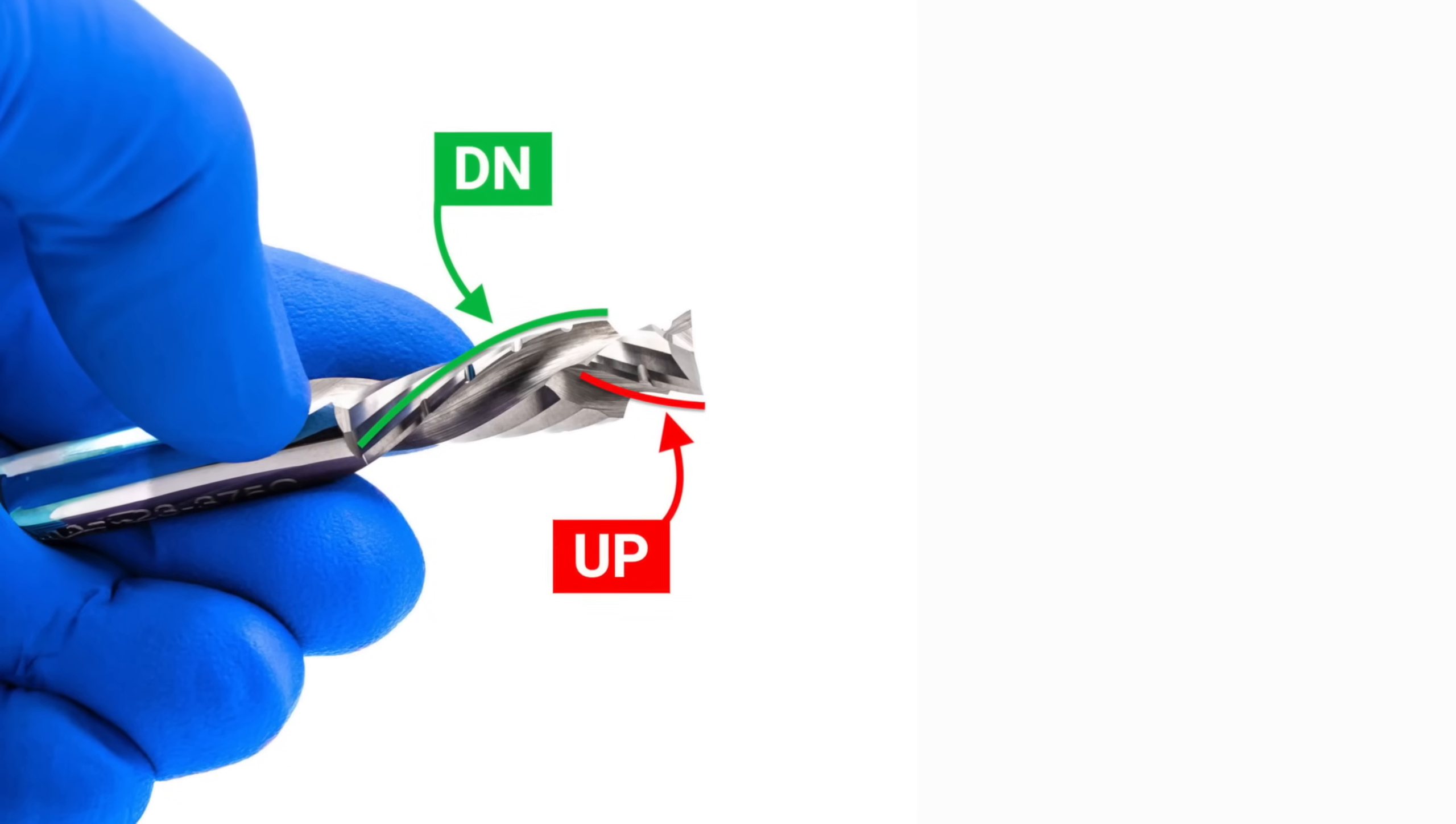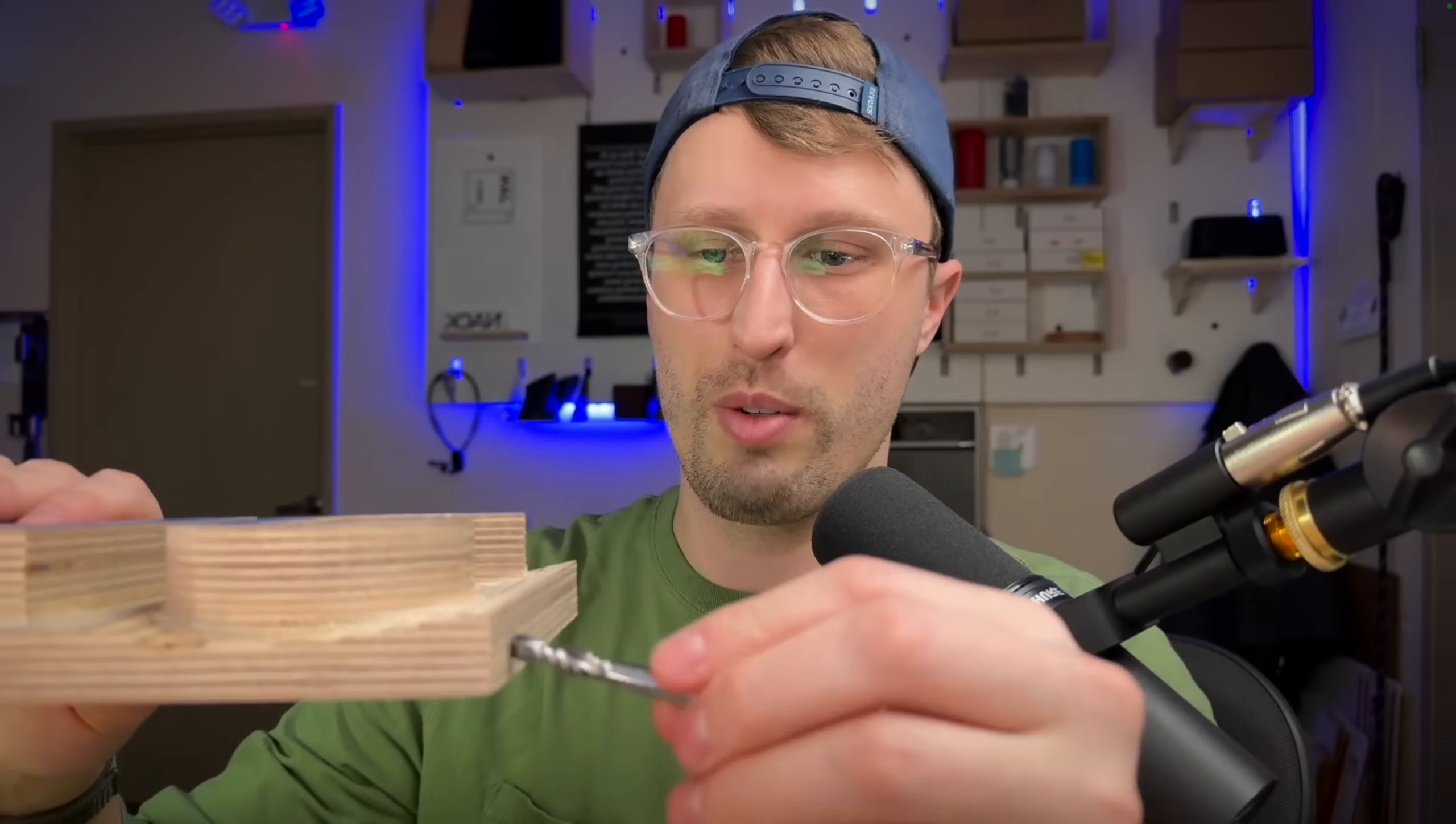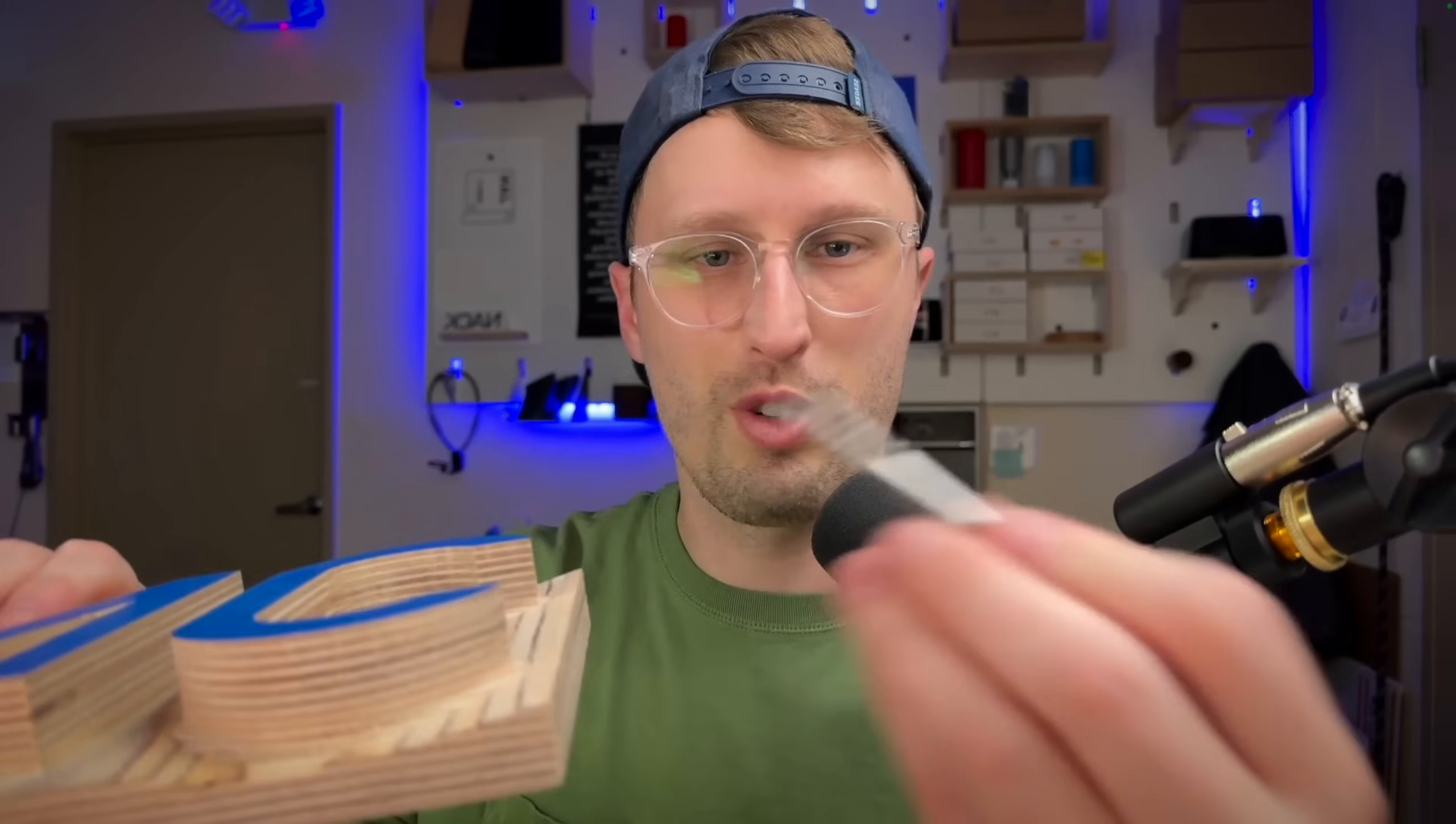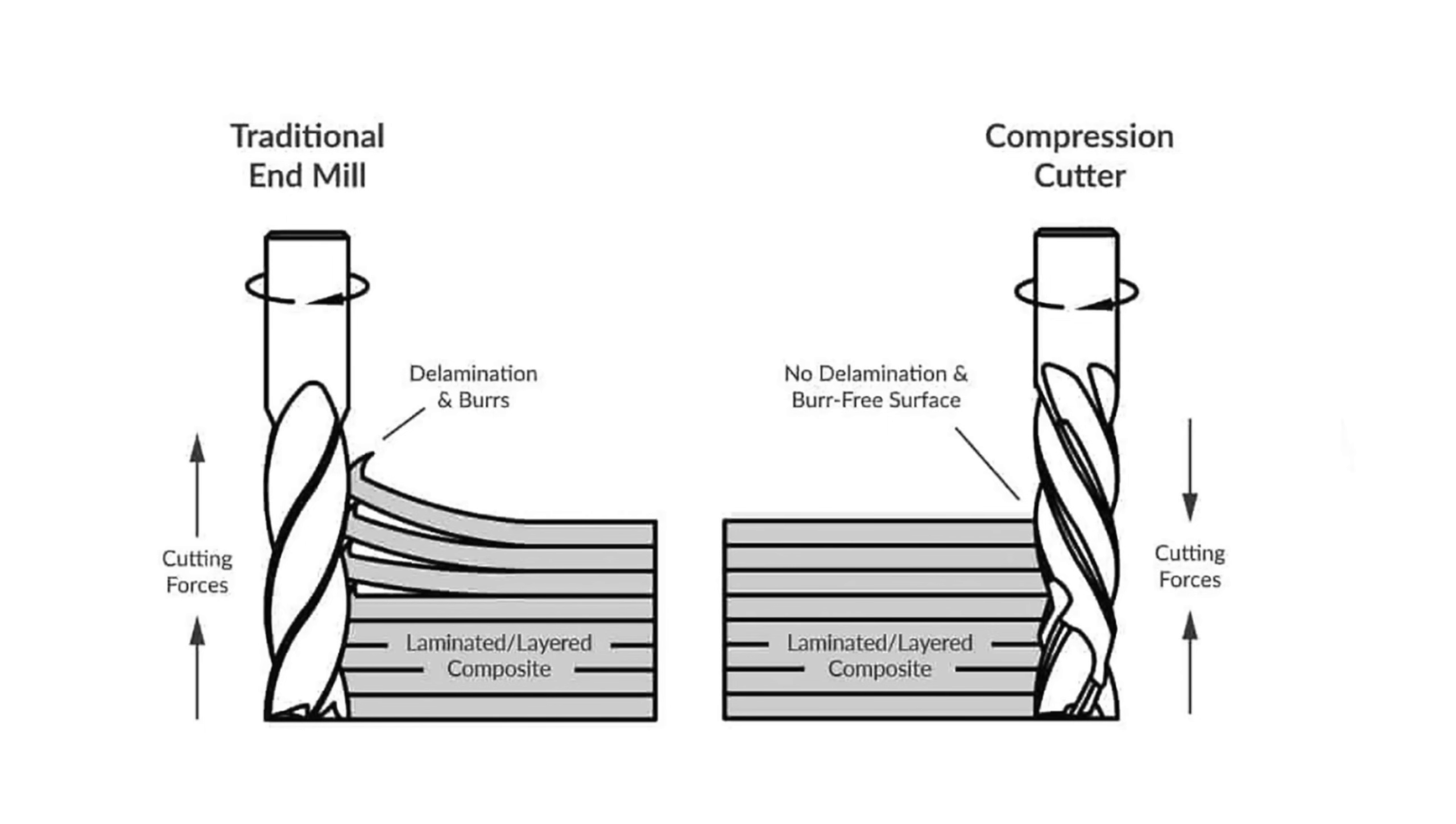And most spindles that are four to twelve horsepower can cut a three-quarter inch piece of plywood in one pass with a quarter, sometimes up to a half inch compression cutter. And you get a really clean cut. Some of that's how you set your settings, and some of it's the tool, some of it's the machine work holding. You should be able to cut a compression cutter in a slotting pass all the way through plywood. And a compression cutter is going to get you a clean edge on the top and the bottom at the same time.